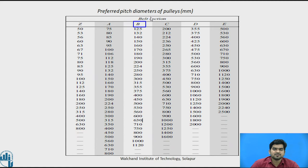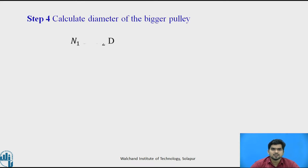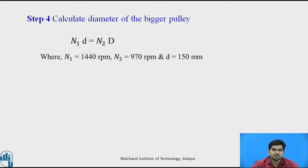For the B-belt, you can select the preferred pitch diameter as 125, 132, 140, 150, 160, 170, 180, 190, or 200 mm. We have selected the diameter of the smaller pulley as 150 mm, so small d equals 150 mm. Now, calculating the diameter of the larger pulley — capital D — using the values of n1, n2, and small d, we get capital D equal to 222.68 mm.